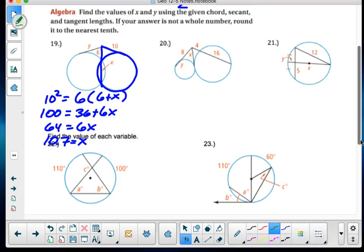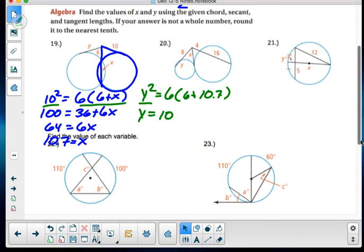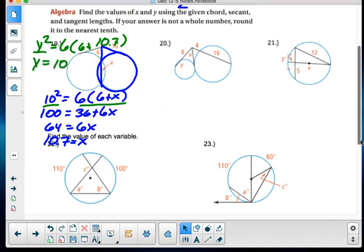Now, if I look at this other one, I've got y squared is equal to 6 times 6 plus x. Now, this looks a lot like the last one, except now I've got x is equal to 10.7. But I just answered this question. So y squared is equal to this. So that means y squared has to be the same as 10, so y is equal to 10. And we'll slide this up here, and call that good.